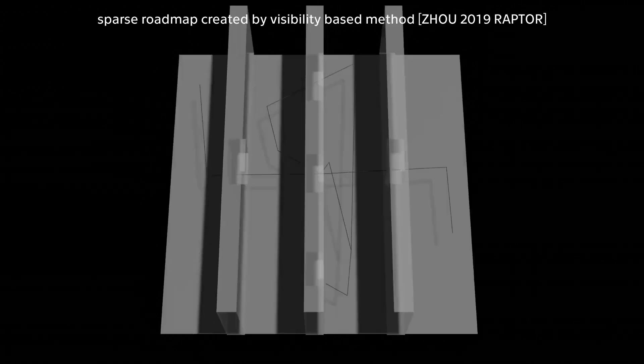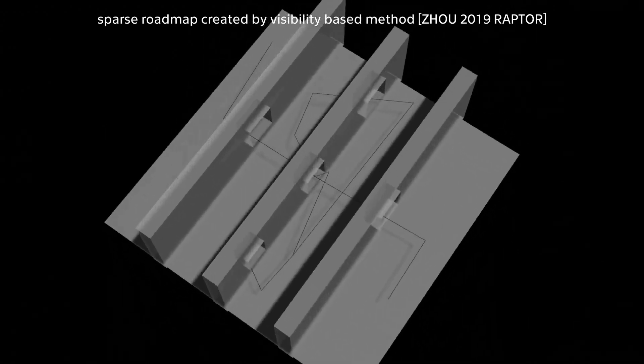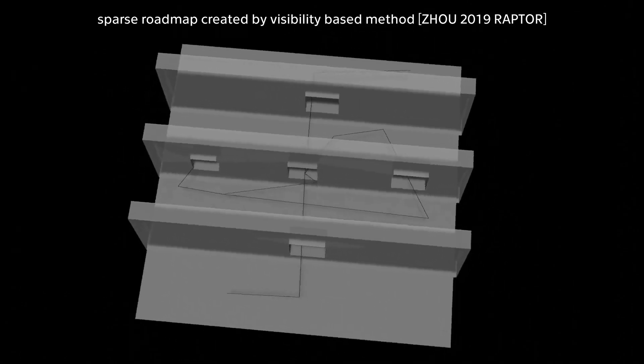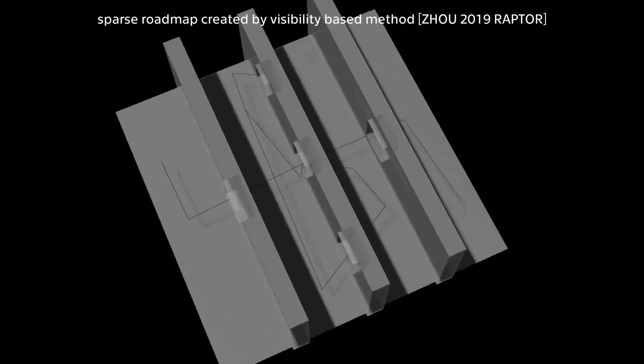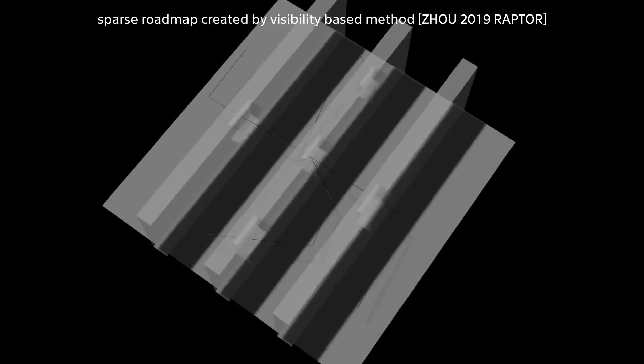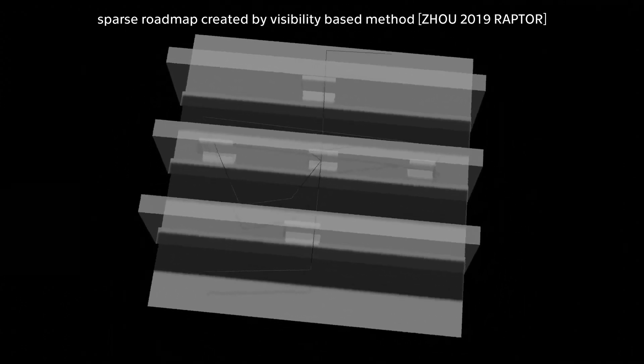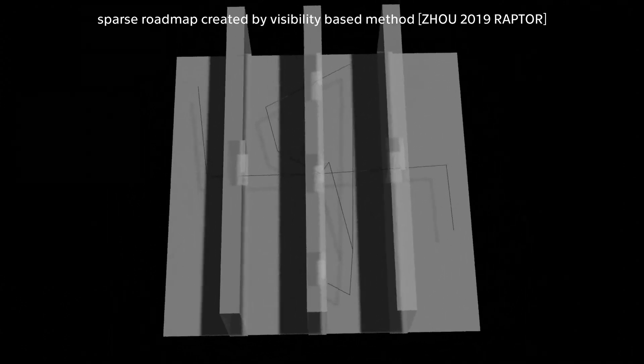On the other hand, a sparser roadmap often fails to capture all homotopy classes, especially in challenging environments containing multiple narrow passages. Only a dense roadmap can accurately represent connectivity of free space in these environments.